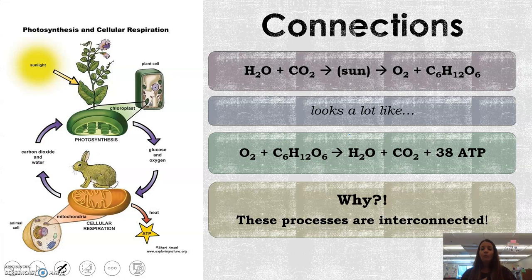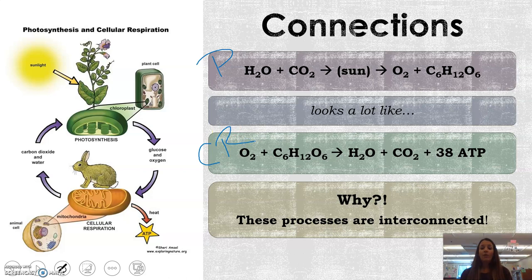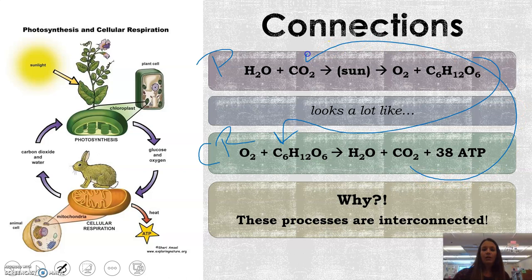Finally, let's connect it all together. The photosynthesis formula and the cell respiration formula look very similar because they're interconnected. The products of photosynthesis are the reactants of cell respiration, and the products of cell respiration are the reactants of photosynthesis. It's really important to know they are very interconnected — we'll get more into this during class. And that was your brief overview of photosynthesis and cell respiration.